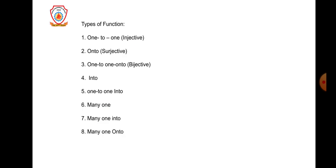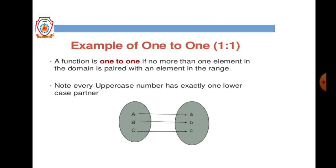Next, we will discuss the types of functions. There are eight types: one-to-one, onto, one-to-one onto, into, one-to-one into, many-one, many-one into, and many-one onto. One-to-one function is also called an injective function; onto is called surjective; and one-to-one onto is called bijective.